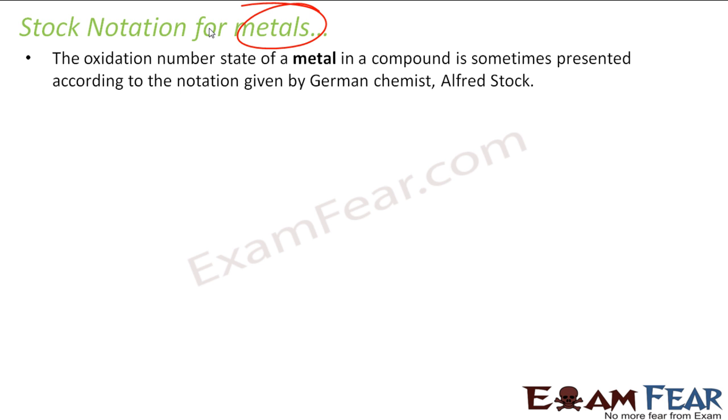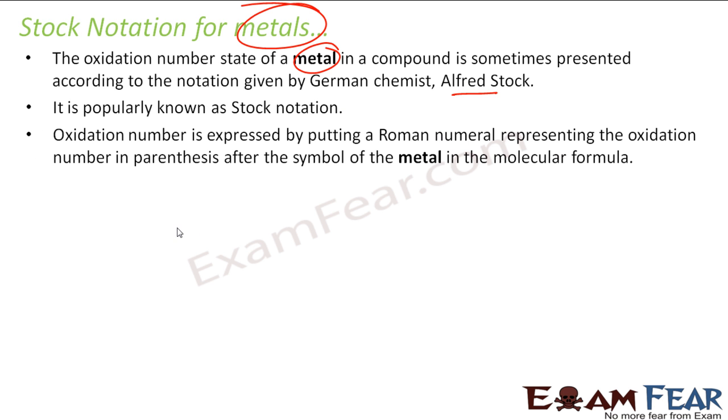The oxidation number stated for metal in the compound is presented according to the notation given by the German chemist Alfred Stock. This is also called Stock notation. If you see, the oxidation number in this case is expressed by putting the Roman numeral representing the oxidation number.